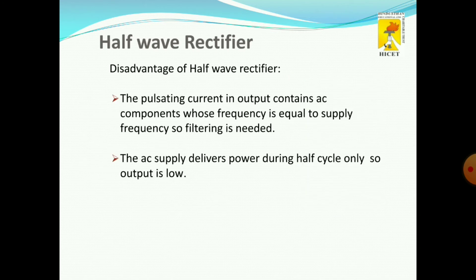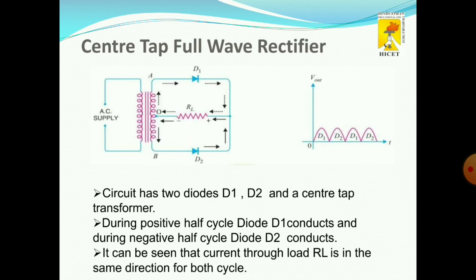What is the disadvantage of a half wave rectifier? We are using pulsating current as input, so the frequency is equal to the supply frequency, meaning filtering is needed. The AC supply delivers only during the positive half cycle, so the output is low compared to the full wave rectifier.